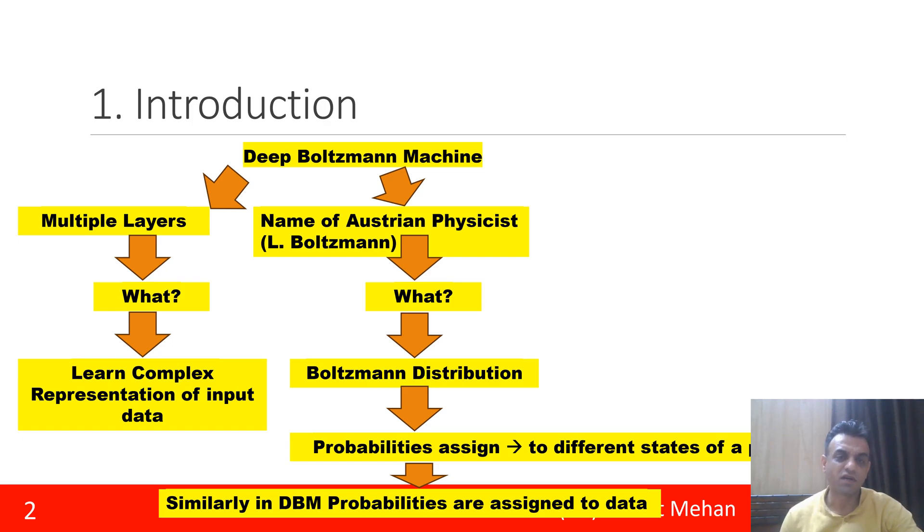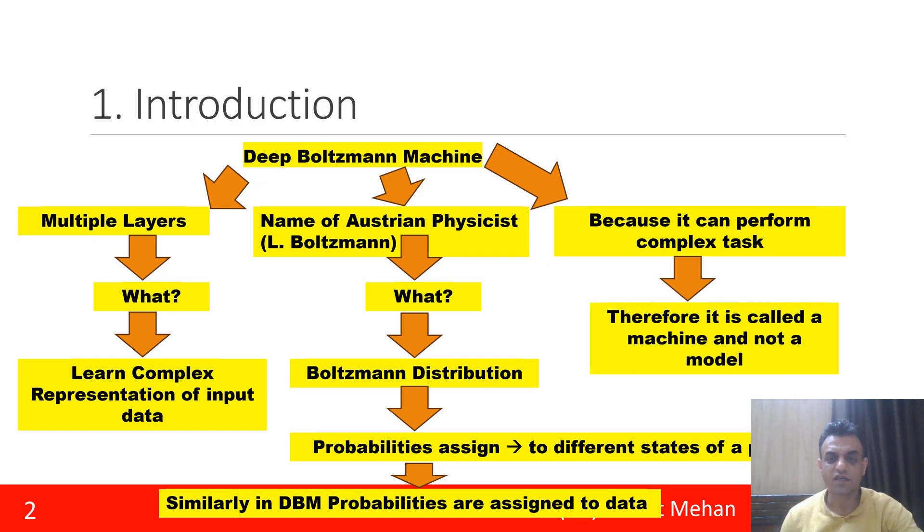Then this third word is 'machine' because it can perform complex tasks. That is why we are calling it a machine, not a model. So deep for multiple layers, Boltzmann for Boltzmann distribution, and machine because it performs complex tasks.